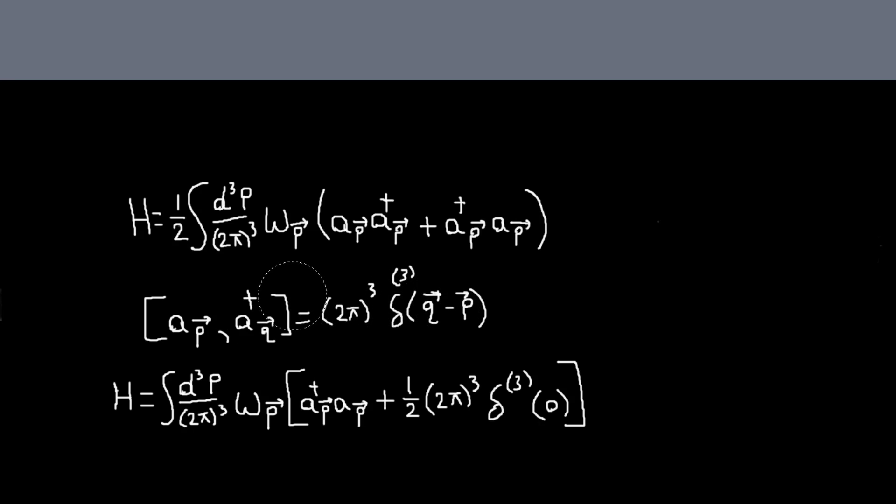This thing, and in this case, in general, p and q are different momenta. And in this expression, everything has momentum p, so basically I'll get a delta of p minus p, or delta of zero. So I'll just take this term, commute these two, and using this relation, my Hamiltonian will become this.